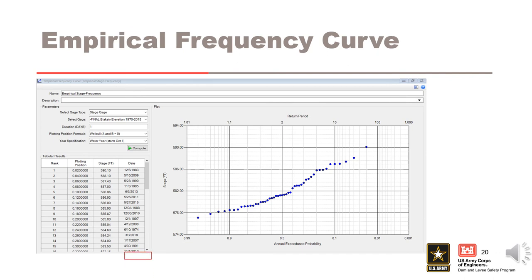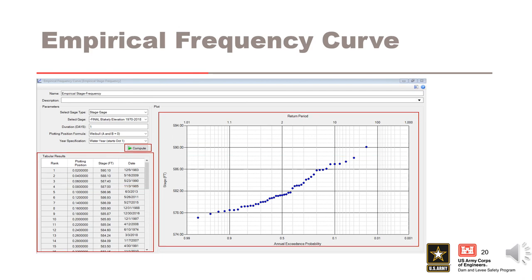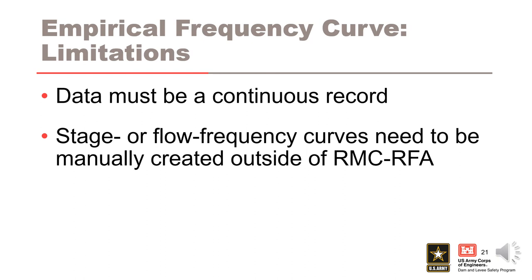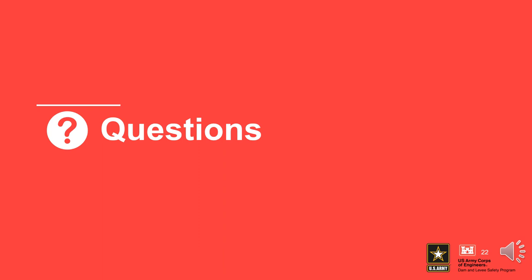Once you hit Compute, the tabular results will plot and are populated. The empirical frequency curve will be available to display with the simulation results. This can help to calibrate the model to make sure that the model prediction is similar to actual observed events. The empirical frequency curve analysis in RMC-RFA has some limitations. Plotting positions can only be calculated for a continuous record. If you have historic stage or flow information, Hurst-Stettinger plotting positions can be calculated using the RMC BestFit software. A plot showing these plotting positions on the stage or flow frequency curves would then need to be manually created outside of RMC-RFA. You should now have an understanding of empirical frequency curves, how to compute the analysis in RMC-RFA, and how to use them in the software.